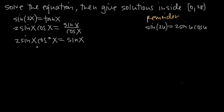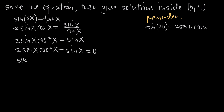Now we want to subtract sine of x from both sides. Be careful not to divide out a sine of x here, because if we do, we're going to lose some solutions. Instead, we want to subtract to bring it over to the left-hand side. So 2 sine of x cosine squared of x minus sine of x is equal to 0. This way we can factor out a sine of x. In the first term we're left with 2 cosine squared of x, and pulling sine of x out of the second term leaves us with minus 1, equal to 0.